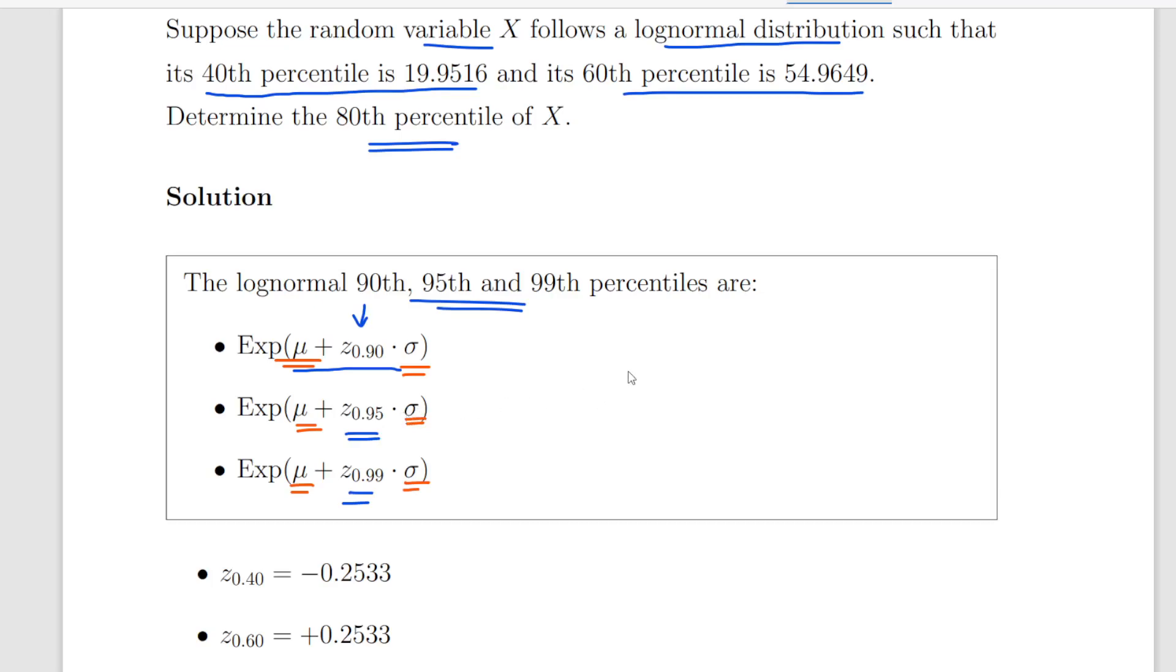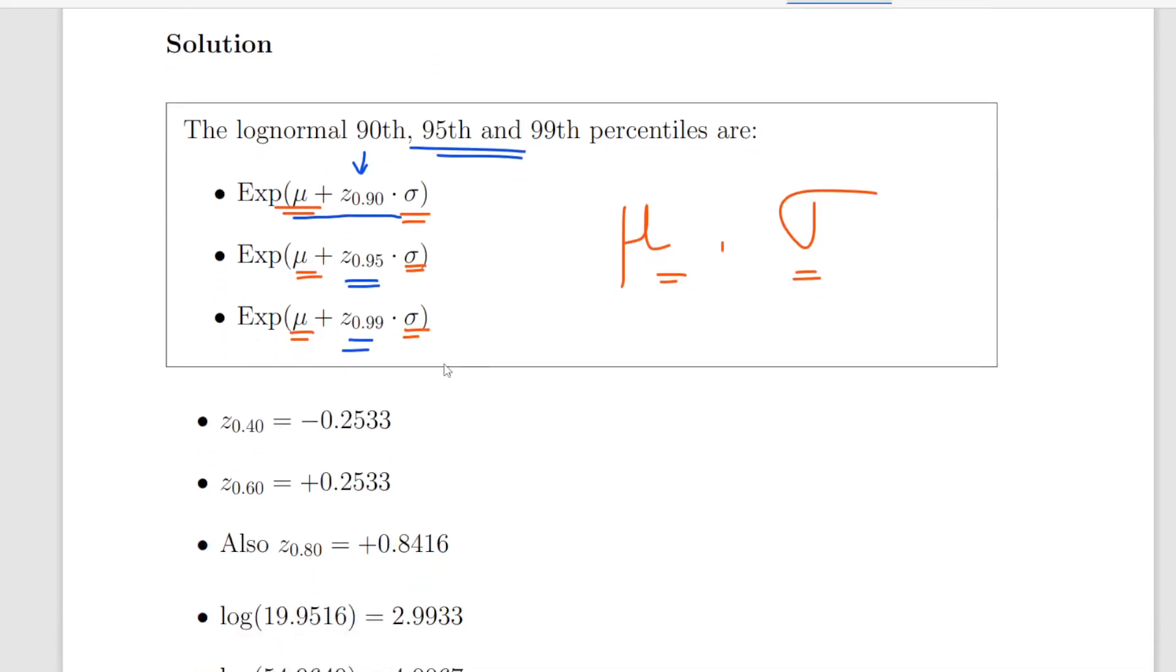So the key thing here is what we have to do is find out what mu and sigma are based on this information. This is going to help us here that the 40th percentile from the standard normal distribution, the Z score, is minus 0.2533.